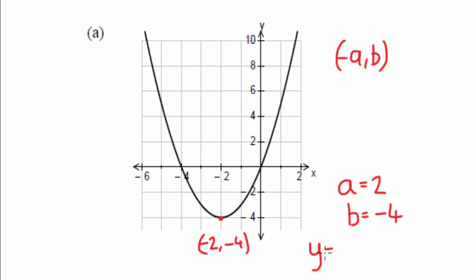So we can rewrite this out. y equals x plus 2 squared minus 4. So the minus 4 relates to minus 4 in the y axis. And the plus 2 relates to minus 2 in the x axis.